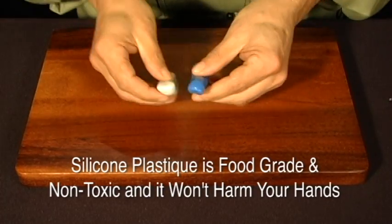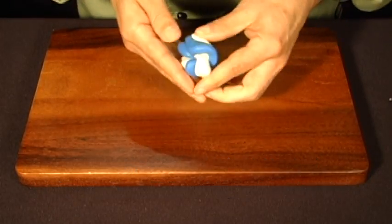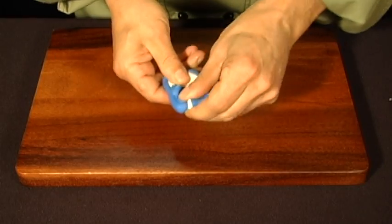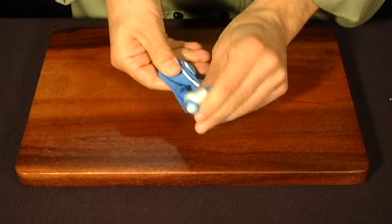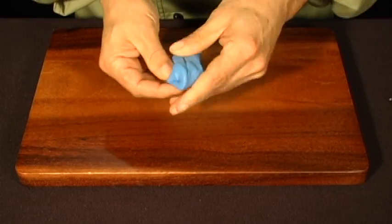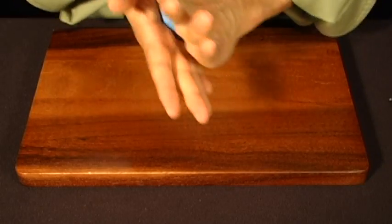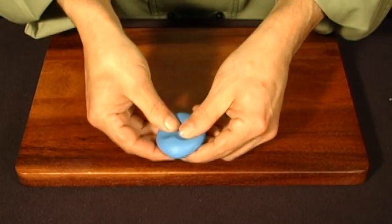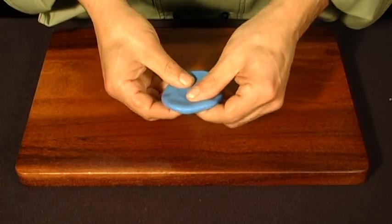To mix silicone plastique, simply combine both parts and mix by folding and kneading the parts together until the streaks of white and blue combine to a uniform color. This is very important since complete mixing of the two parts ensures superior strength and flexibility.